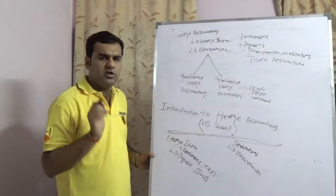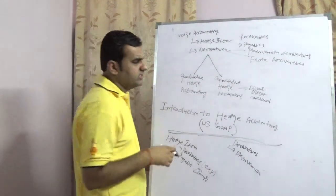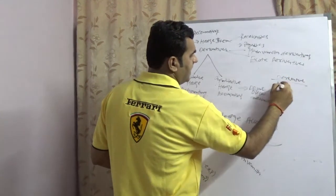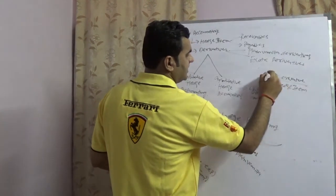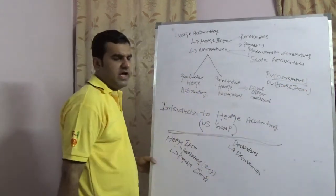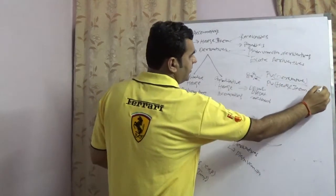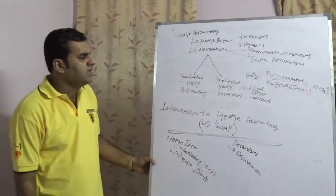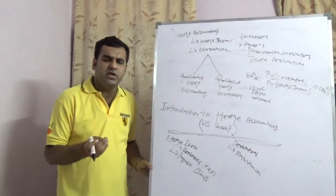It is the dollar offset method that has given this world the principle that hedge accounting is nothing but your derivative divided by the hedged item — that is, the present value of the derivative divided by the present value of the hedged item — and this ratio should lie between 80% to 125%.